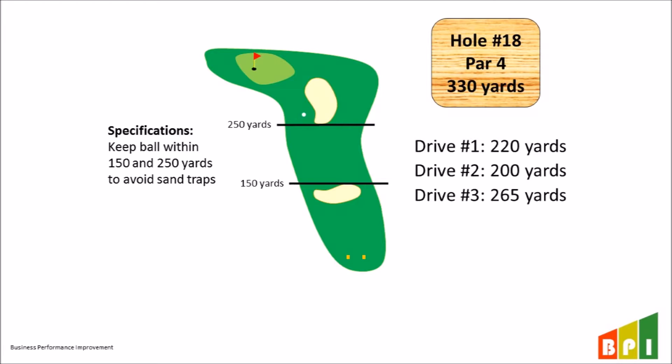The fourth drive was too short, only going 135 yards, which results in a penalty for going into the sand trap. The fifth drive was 170 yards — well below the 250 yard upper limit, but just barely past the 150 yard lower limit. The further away from the limits you are, the less risk there is of going past them. The goal is to consistently hit the target distance of 200 yards, which is the midpoint between the two limits, in order to reduce the chance of exceeding either limit.